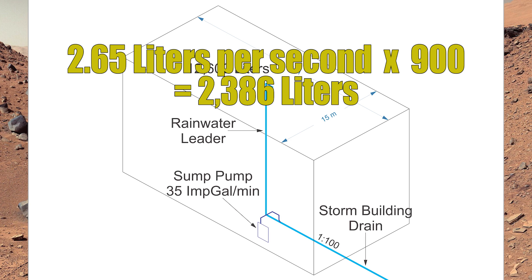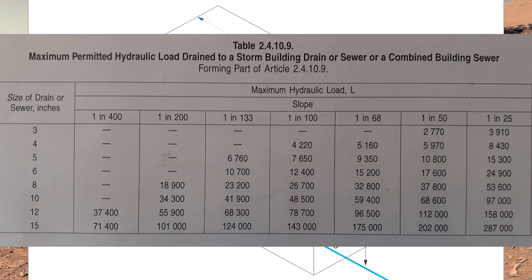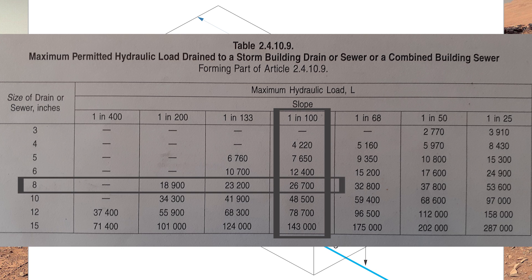To size the storm building drain that has both the rainwater leader and the sump draining into it, we add those two numbers together: 12,600 liters plus 2,386 liters equals 14,986 liters, graded at 1 in 100. Back in table 24109, going down the 1 in 100 column up to 26,700 — that is also 8 inch.